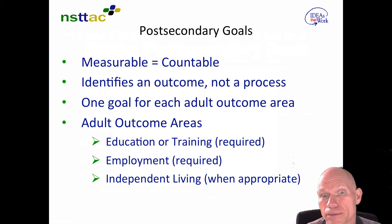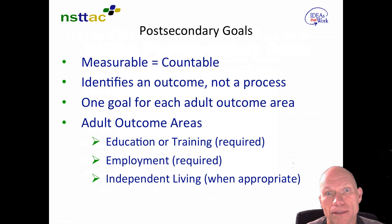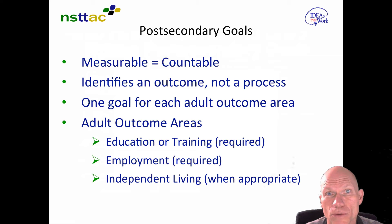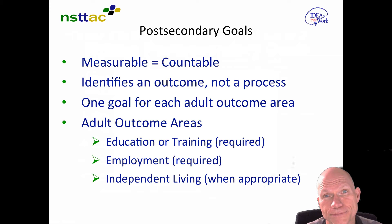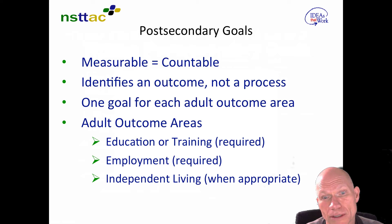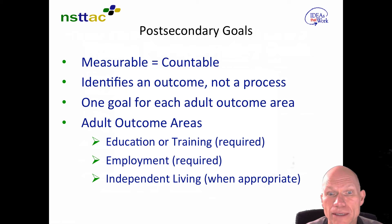The adult outcome areas are education or training — any educational or training goal required to help a student meet their post-school hopes and dreams — and an employment goal describing what kind of employment they'll be engaged in. Finally, an independent living goal, but that one is only required when appropriate. If a student has significant self-care needs, you may need to write independent living goals.